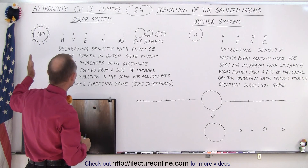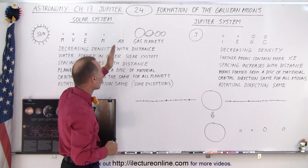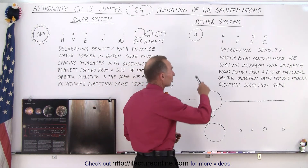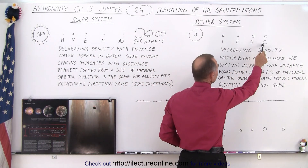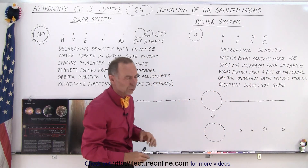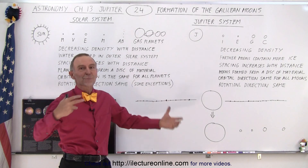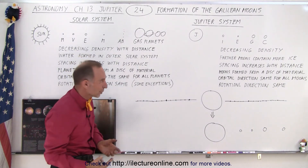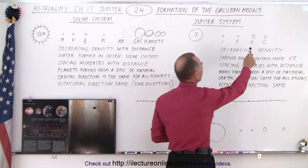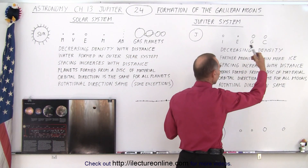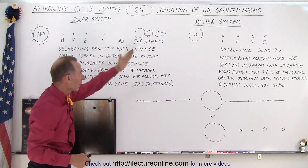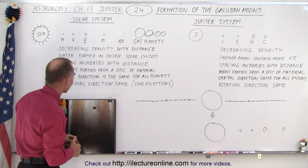Secondly, we also see that most of the water formed far away from the Sun in the outer solar system. When you take a look at the moons, we realize that Ganymede and Callisto have a much greater proportion of ice compared to the first two moons. Even though Europa is known as the ice moon or the ocean moon or the water moon, for the total moon we'd have a lot more ice contained within Ganymede and Callisto relative to their size compared to Io or Europa, just like we see more ice further away from the Sun in the solar system.